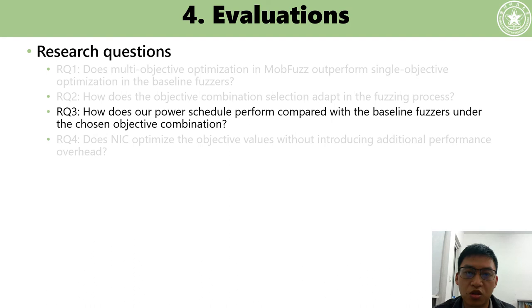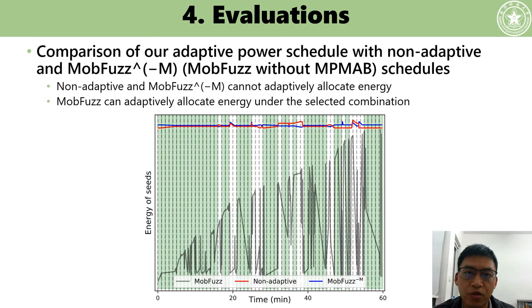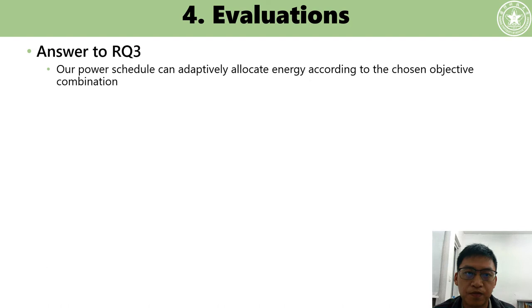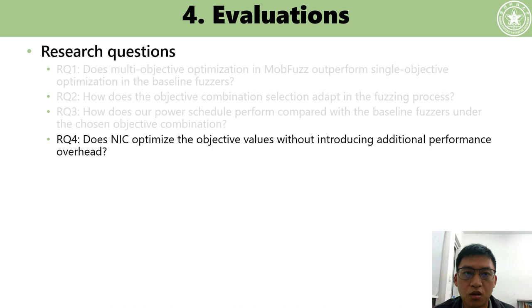Research question three: how does our power schedule perform compared with baseline fuzzers under the chosen combination? Results show that non-adaptive and MOB-Fuzz without MPMAB scheduling cannot adaptively allocate energy. MOB-Fuzz can adaptively allocate energy under the selected combination. Therefore, our power schedule can adaptively allocate energy according to the chosen objective combination.